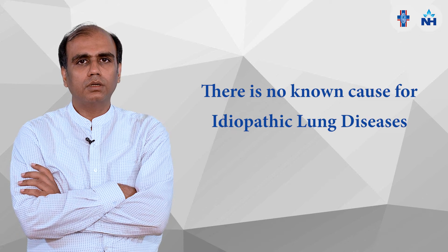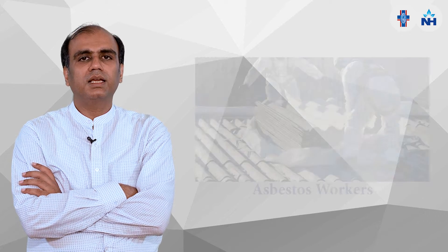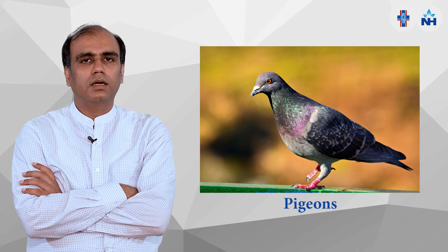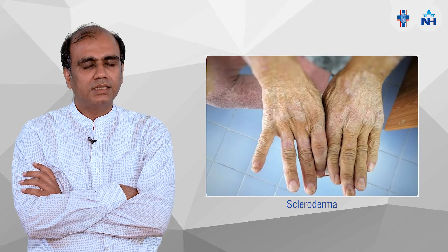There are around 300 types of ILDs. We can categorize them basically into five categories. First, idiopathic — where there is no known cause. Second, occupational ILDs — the person who is working in industrial areas, such as asbestosis, silica industry, cement factories, and persons who keep pigeons, cattle, and pets. Third, connective tissue disorder-related — patients suffering from rheumatoid arthritis, SLE, or scleroderma.